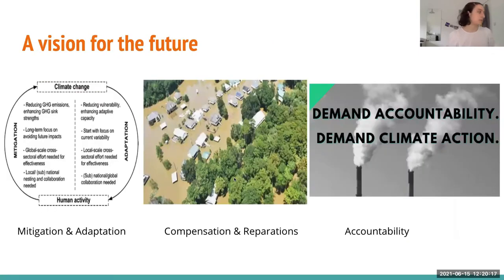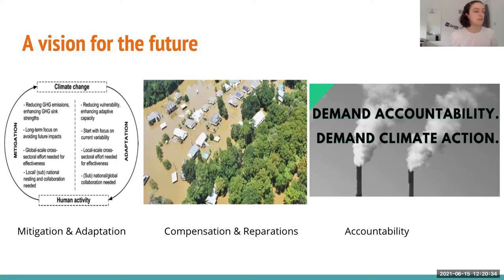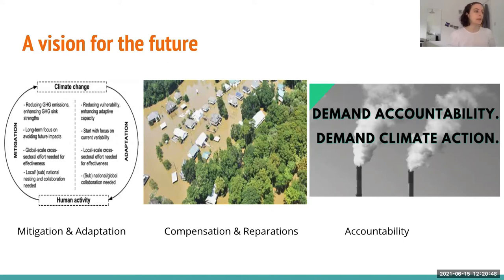In terms of a general vision for the future, we hope that countries work together and implement ambitious mitigation and adaptation plans. But we want to see compensation to the victims of climate disasters and reparation to people who were wronged by the injustices of big polluting countries that refused to provide support for loss and damage. Ultimately we want accountability from big polluters — both governments and the biggest polluting companies, such as fossil fuel companies.